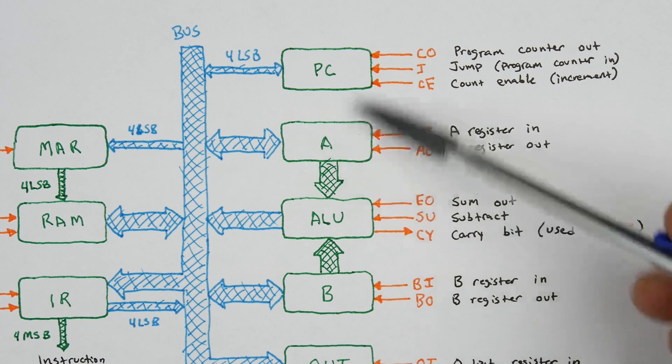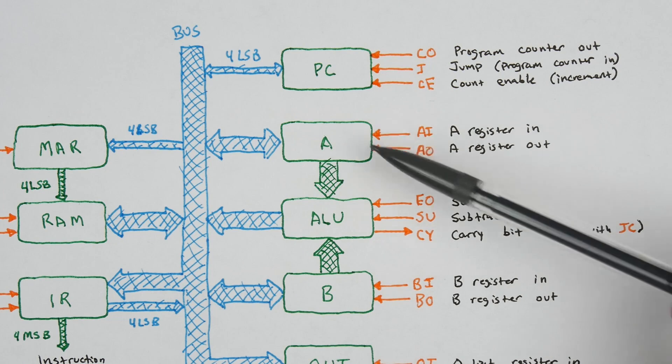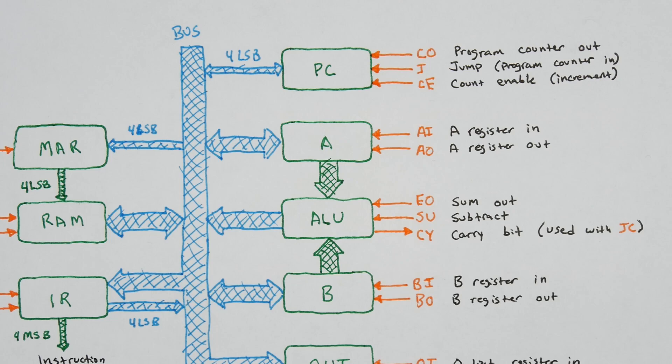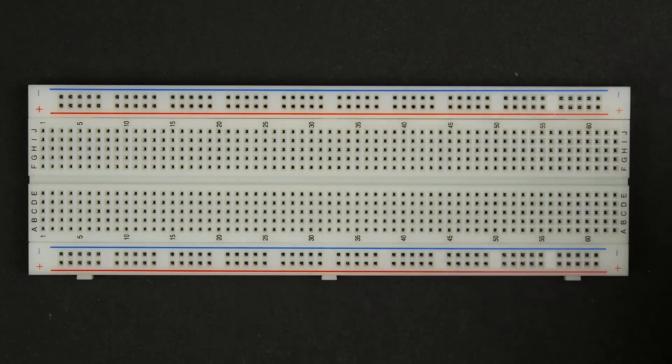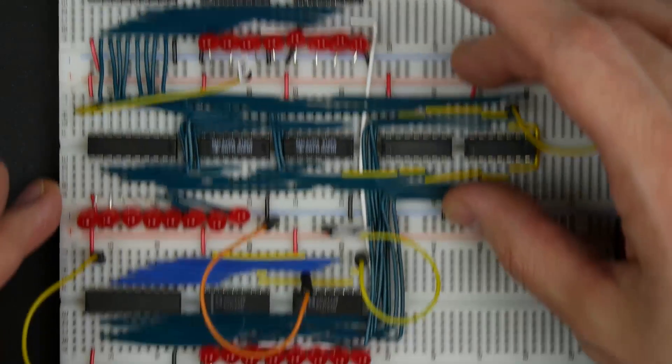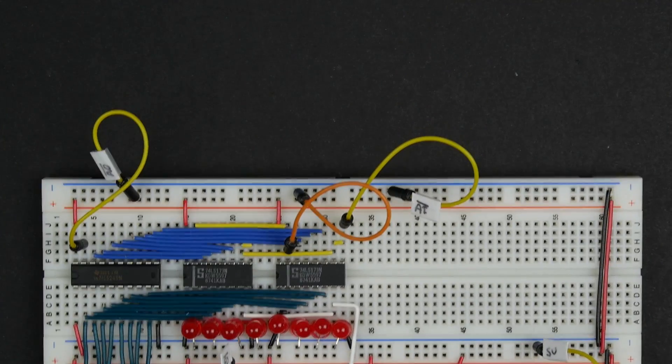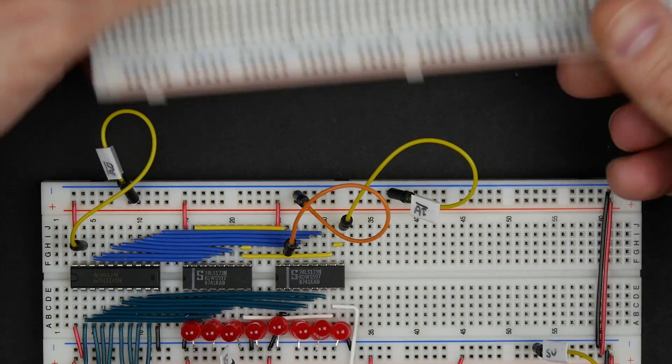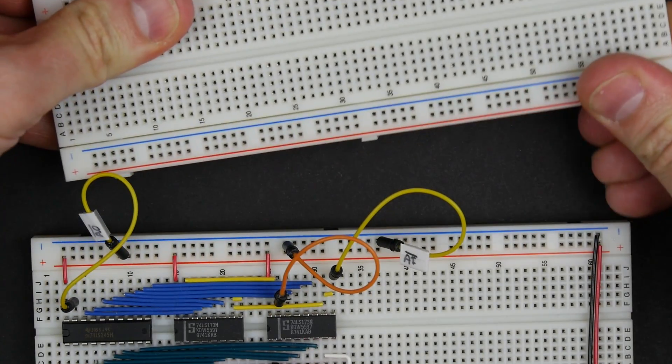When I build the program counter, I'm going to lay it out physically the same way it is in this diagram. I'm going to put it just above the A register. So I'm going to take my A register, this is the A register, of course the ALU and the B register. So I'm going to take another breadboard and connect it here above the A register.